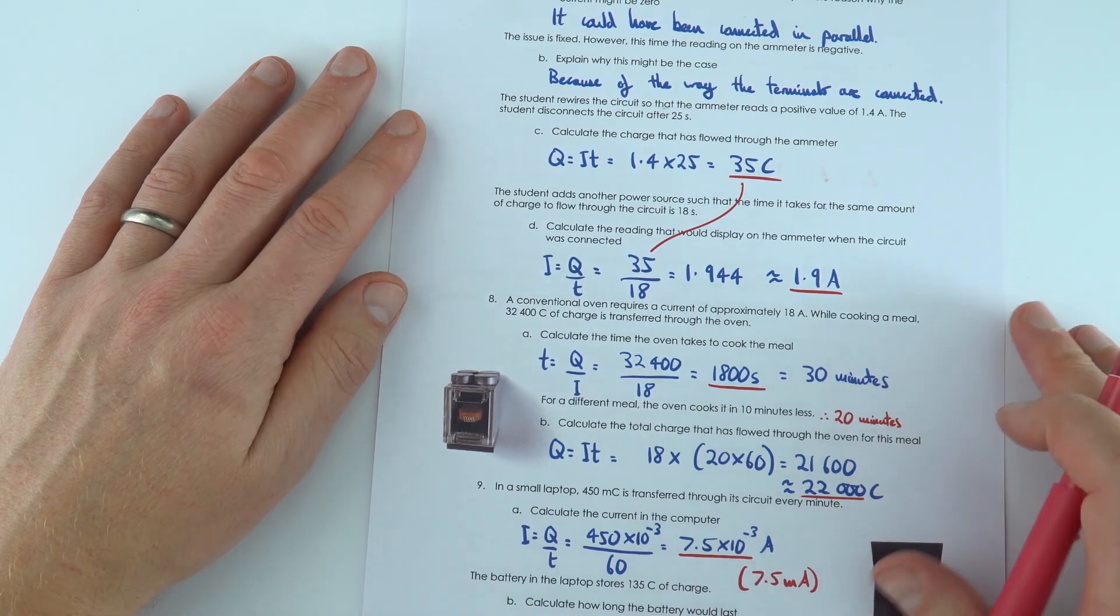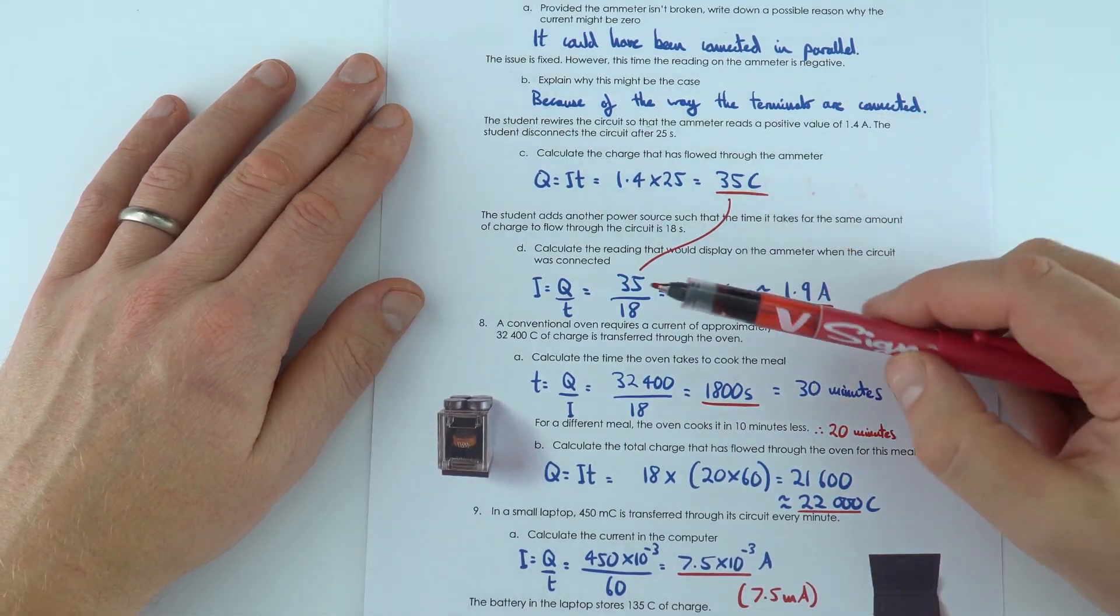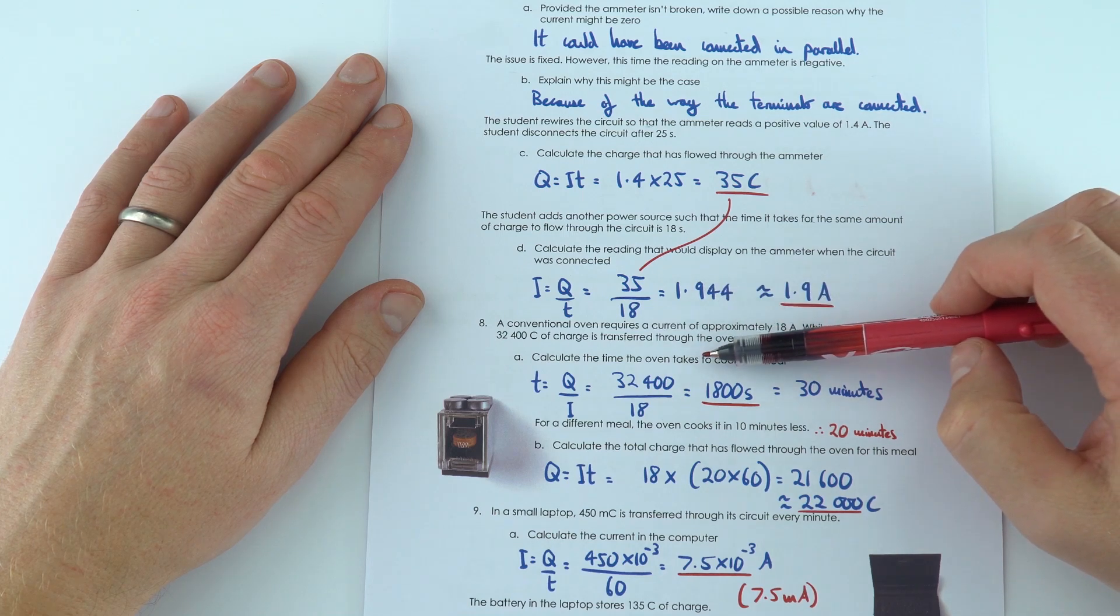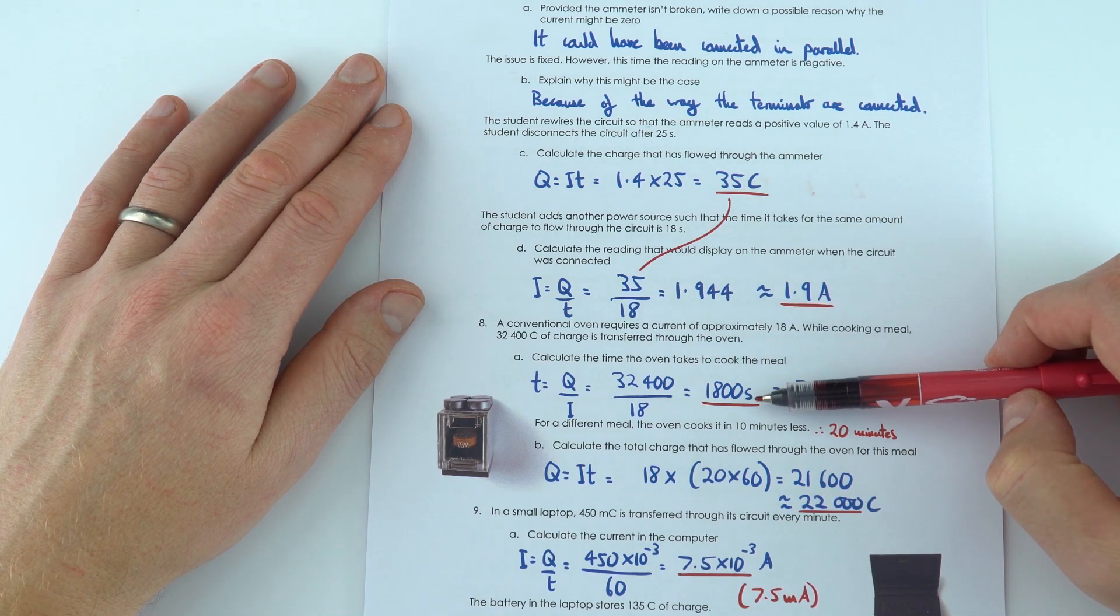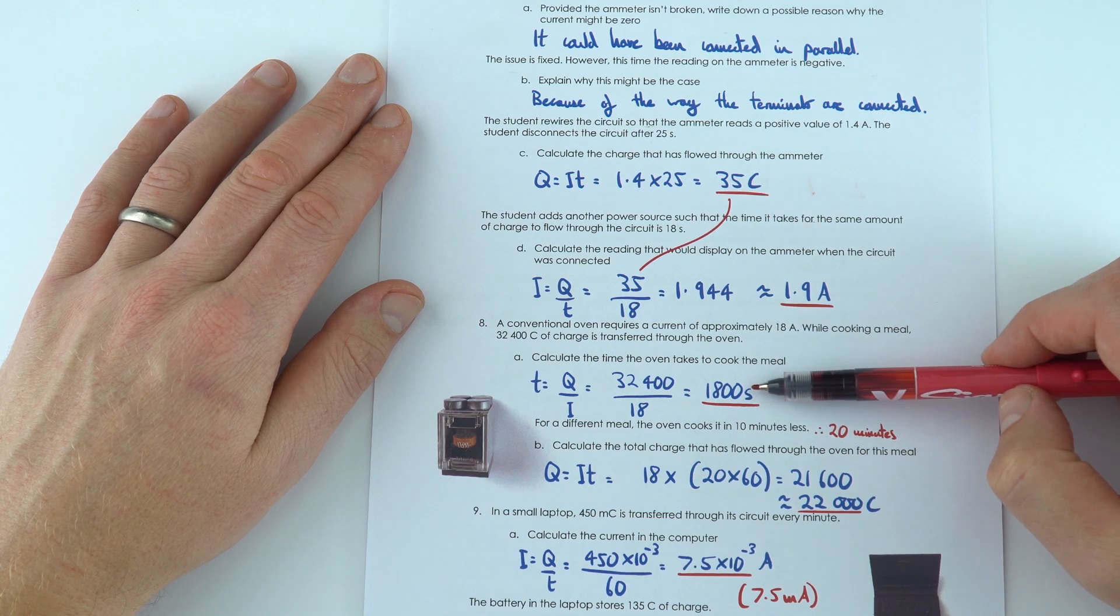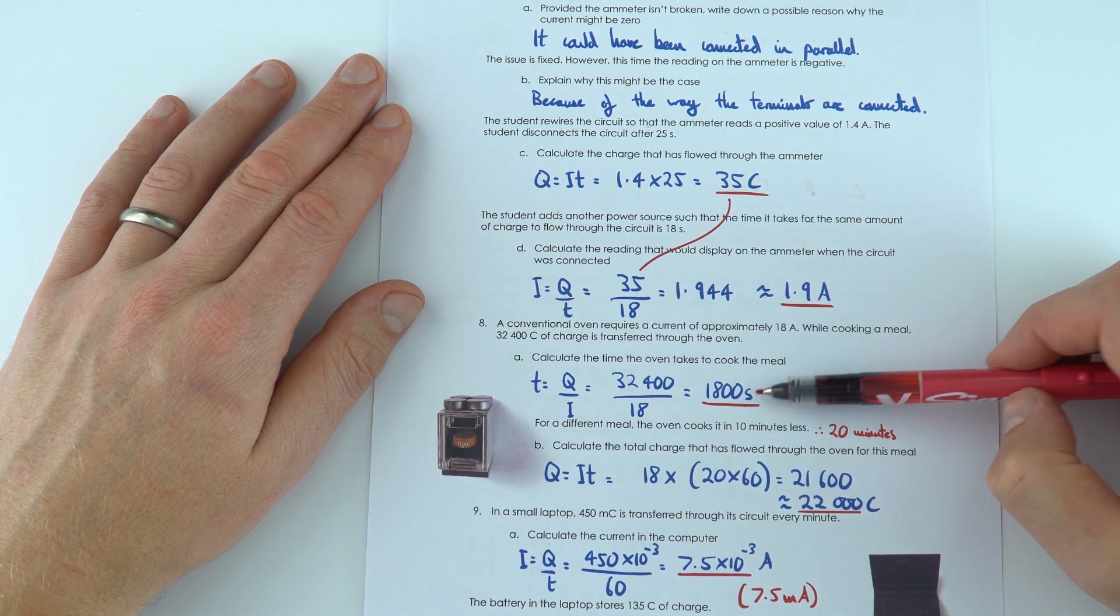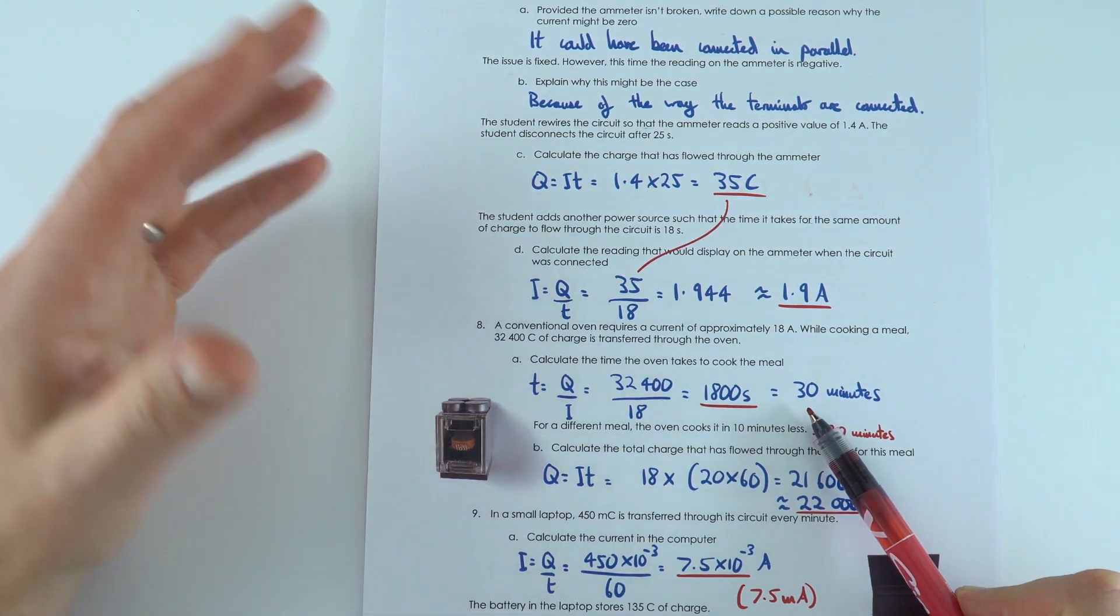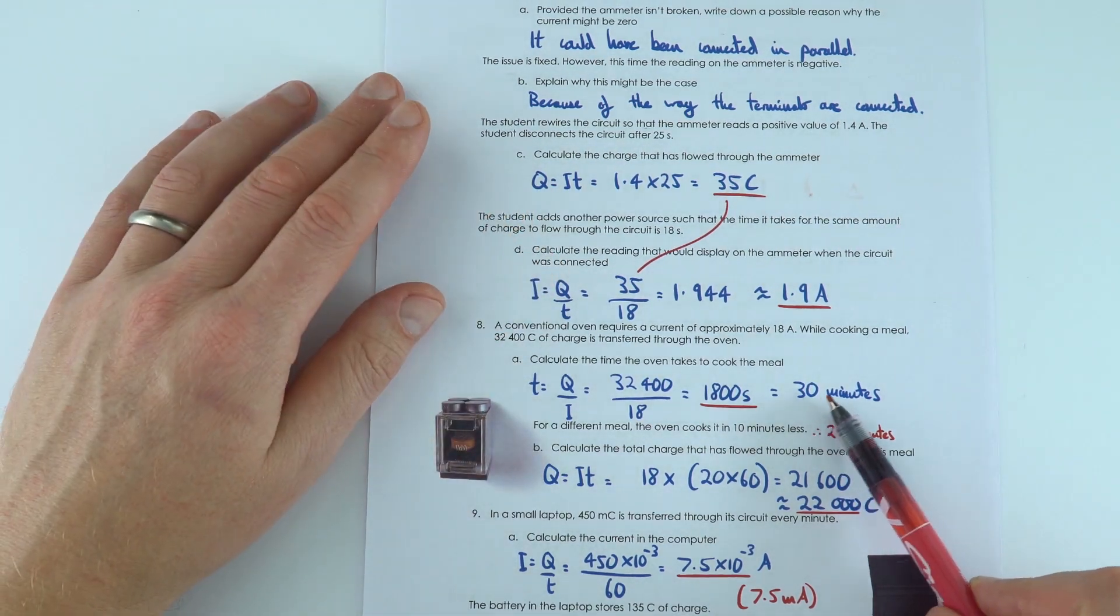This one over here actually shows that sometimes we have things turn on for a long time. So the time it takes for the oven to cook the meal was 1,800 seconds. That's a completely fine way to give your final answer. But also, I divided by 60 to show that this is 30 minutes, which is the kind of time it takes to cook something in the oven.